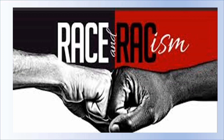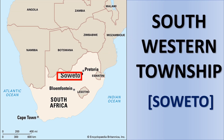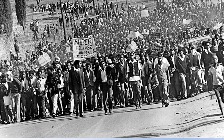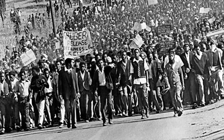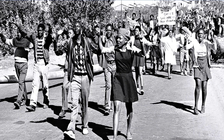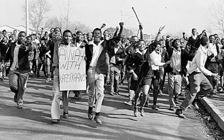There is a township named Soweto in South Africa where all the black people used to live. Hector Peterson also lived in Soweto. He was a boy who went to school. There was a movement in Soweto against the Afrikaans language — a language spoken by white people in South Africa. Hector Peterson and his classmates started this movement because they did not want to learn Afrikaans, which was being forced upon them, and wanted to learn their own language, Zulu.